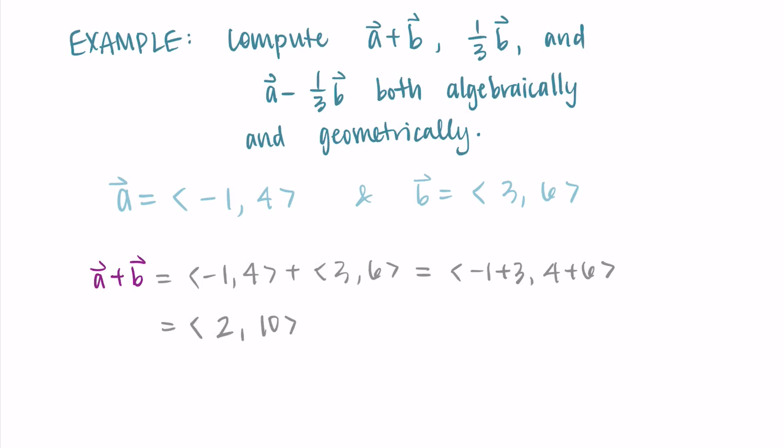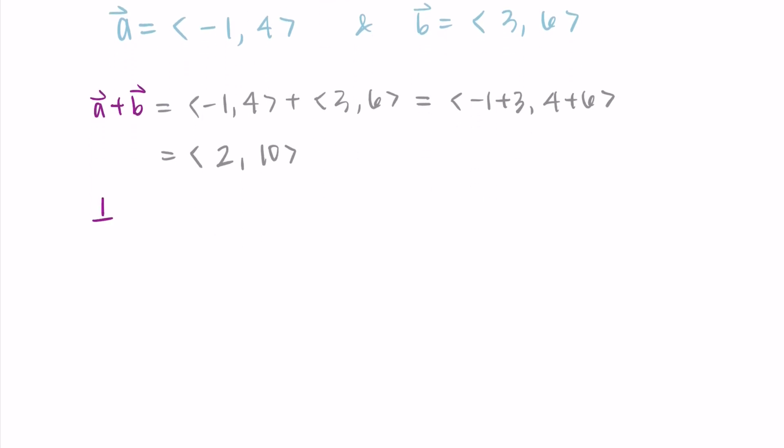All right, let's do one-third of b. So the way it works with scaling is we just take one-third multiplied by the vector b, which is three, six. And that one-third gets distributed into each component. So I do one-third times three and one-third times six.